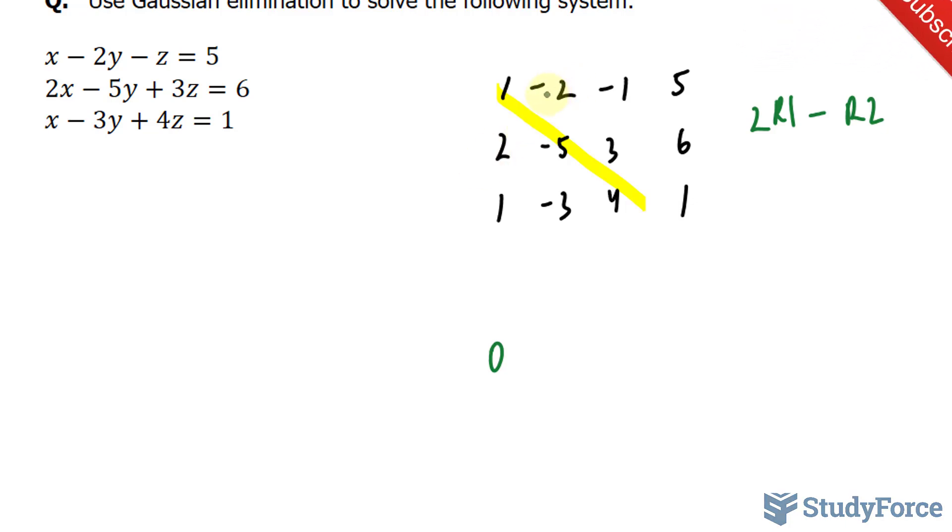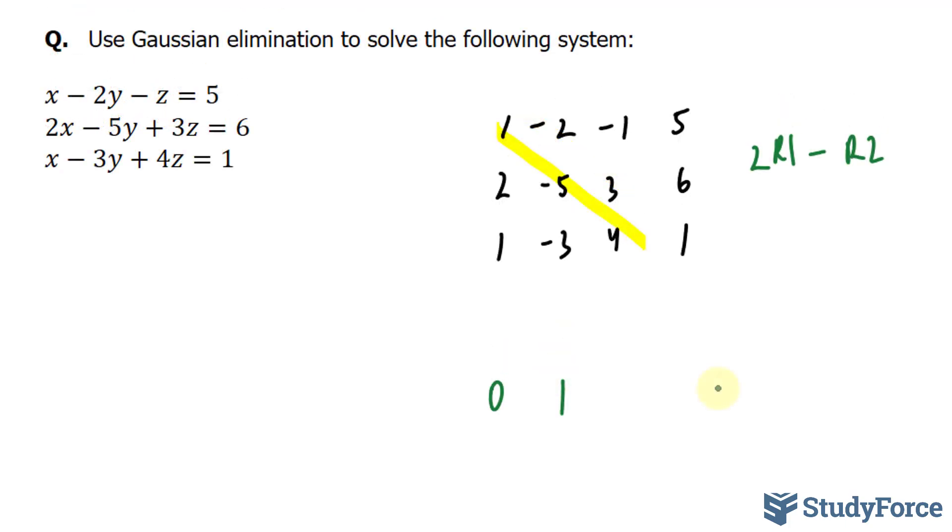Next, I'll multiply this by 2, which gives me negative 4. Negative 4 minus minus 5 is like saying negative 4 plus 5, that's positive 1. Next we have negative 1 times 2, that's negative 2, minus 3, that's negative 5. 5 times 2 is 10, minus 6 is 4. I'll rewrite rows 1 and 3.